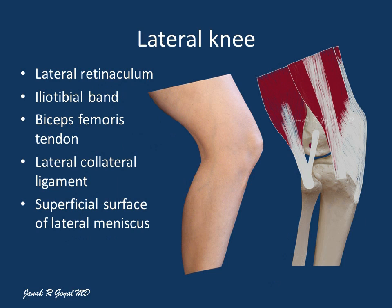The soft tissue structures seen on the lateral side of the knee from anterior to posterior include the lateral retinaculum, the iliotibial band inserting on Gerdy's tubercle on the lateral condyle of tibia, the lateral collateral ligament extending between the head of fibula and the lateral condyle of femur, and the tendon of popliteus in the groove deep to the attachment of the lateral collateral ligament to the lateral condyle of femur. The most posterior structure on the lateral aspect of the knee is the biceps femoris tendon inserting to the head of fibula.